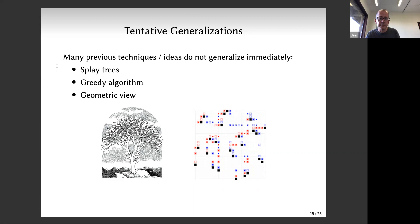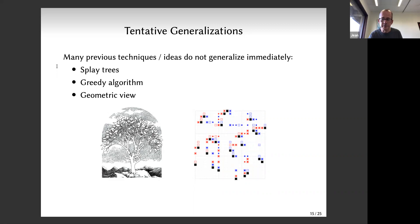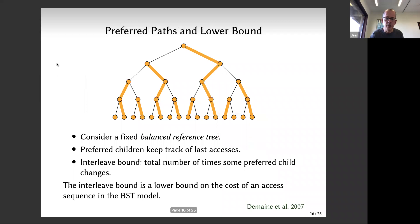Eventually we found one idea we could push through that's reasonably generalizable. The final result: we managed to get competitive online search trees on trees with the same competitive factor as the best known online binary search trees - namely O(log log n). So we achieve O(log log n) competitive online search trees on trees.